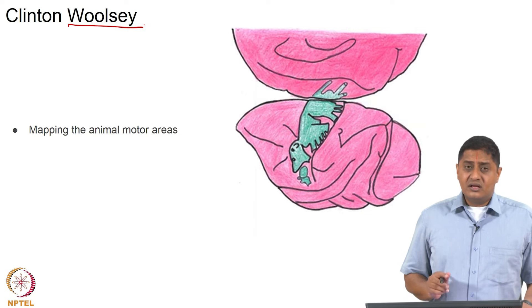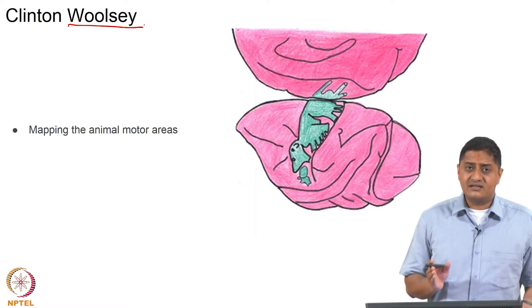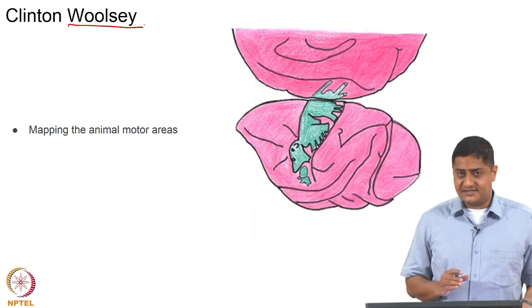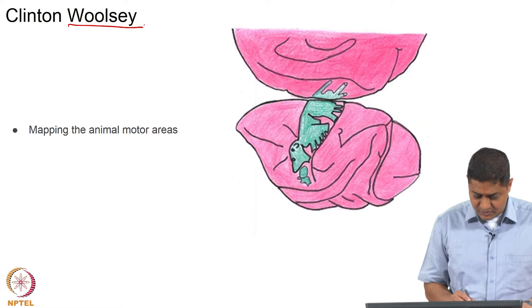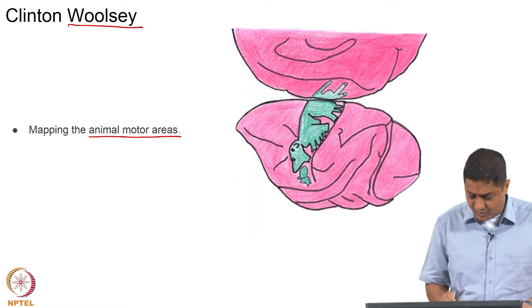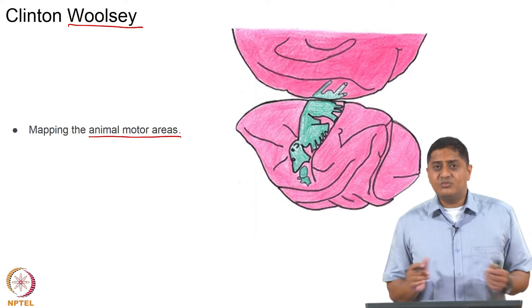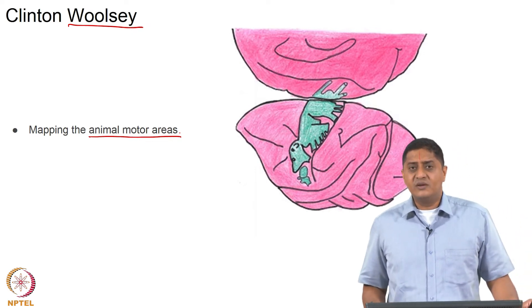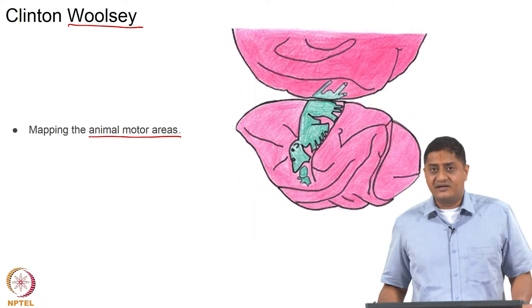Then came the classical neurophysiological studies of Clinton Woolsey, who performed stimulation of specific regions of the strip of neurons just rostral to the central sulcus — the precentral gyrus. He mapped the motor areas in animals, and extensive mapping of the animal motor cortex was undertaken by Clinton Woolsey and his colleagues.